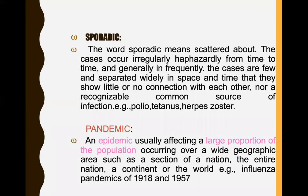Sporadic: the word sporadic means scattered about. Cases occur irregularly and haphazardly from time to time. The cases are few and separated widely in space and time, showing little or no connection with each other and no recognizable common source of infection. For example, polio.